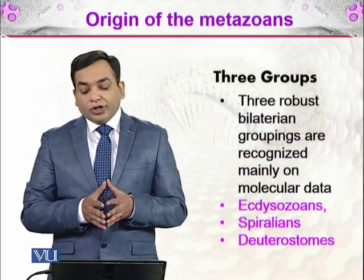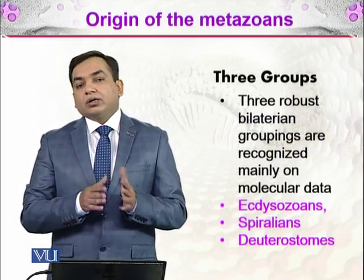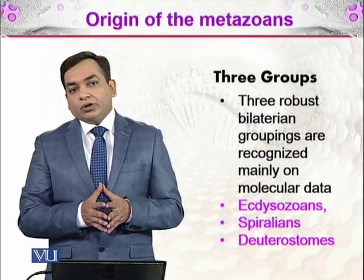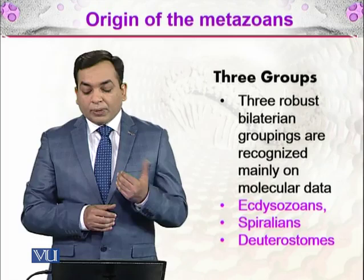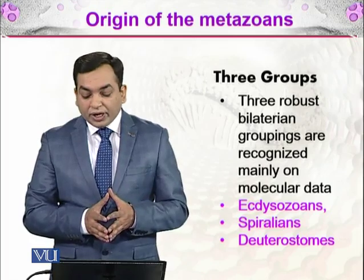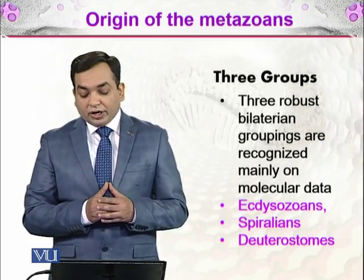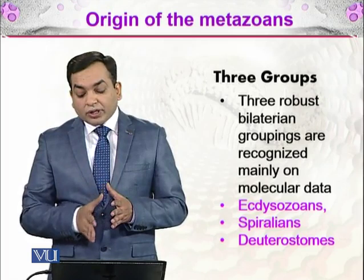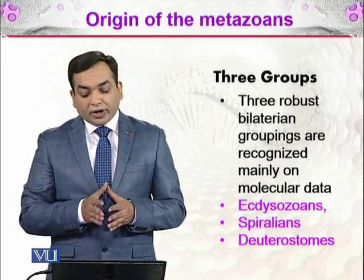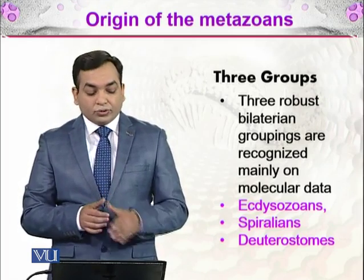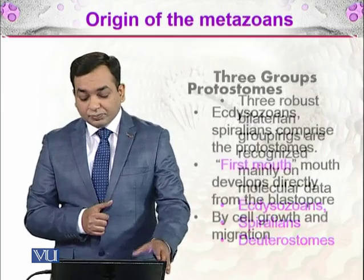There are three robust bilaterian groups — organisms which have bilateral symmetry. These are recognized based on molecular data. These are the ecdysozoans, spiralians, and deuterostomes. We will be discussing these one by one.